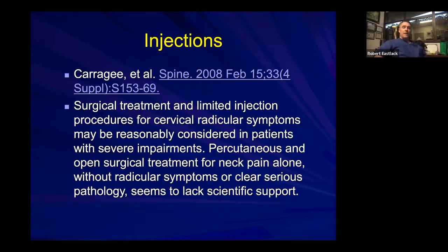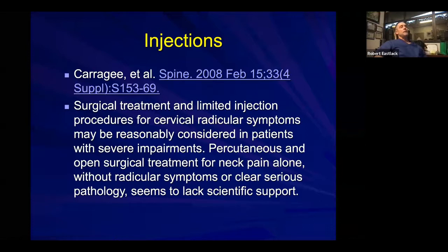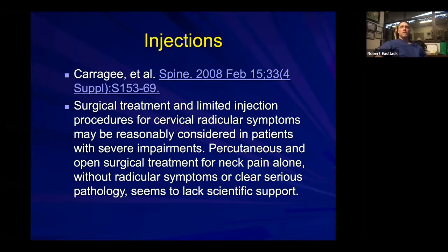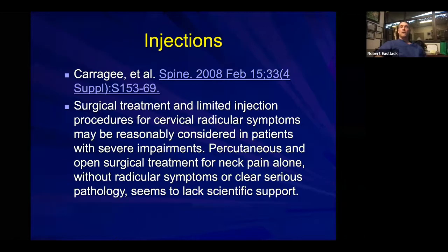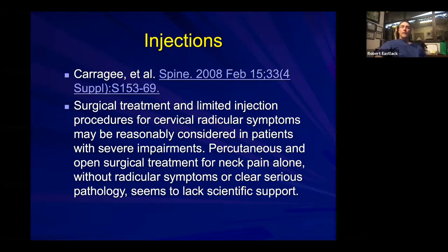Something published in Spine in 2008 — don't be too dogmatic about it, but in general know that surgical treatment and some injection treatment for cervical radiculopathy is reasonably appropriate. Generally speaking, surgery and percutaneous treatments for neck pain alone without radiculopathy tends to lack scientific support. That doesn't mean you never operate for neck pain — for example, florid facet arthropathy is quite appropriate — but you must be very clear diagnostically about what you're treating. Be cautious treating widespread spondylotic disease based on X-rays or MRI alone.